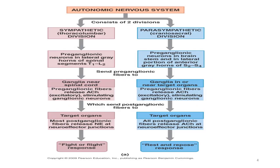The autonomic nervous system consists of two divisions: sympathetic as well as parasympathetic. We have already discussed the parasympathetic division; now we are going to discuss the sympathetic division. It arises from the thoracolumbar division of the spinal cord. The preganglionic neuron is located in the lateral cornu horn of the spinal cord, segments T1 to L2.